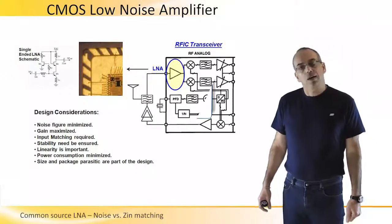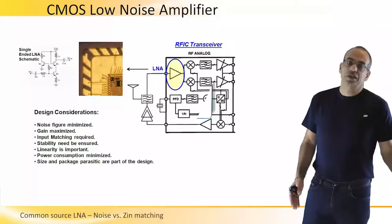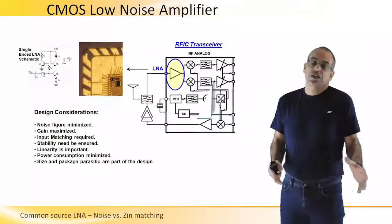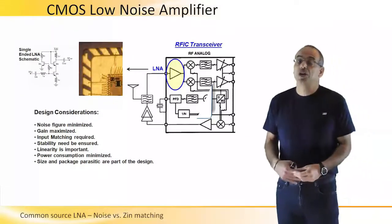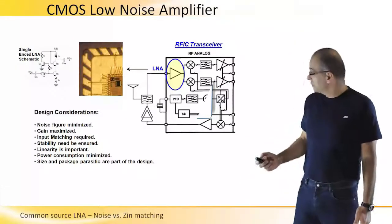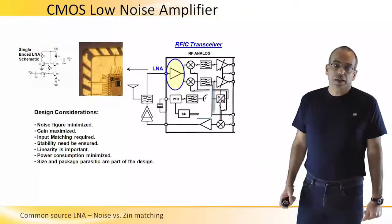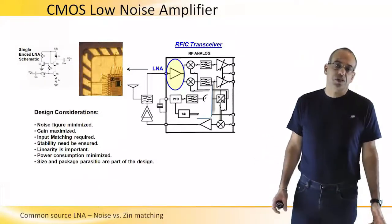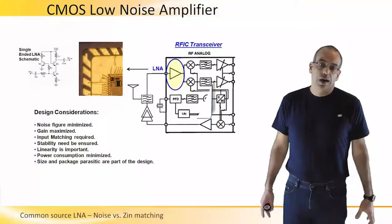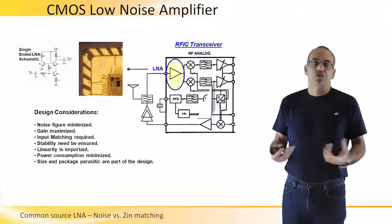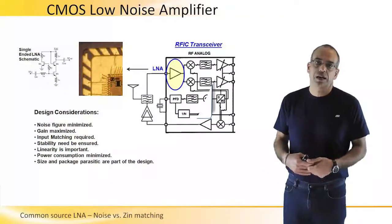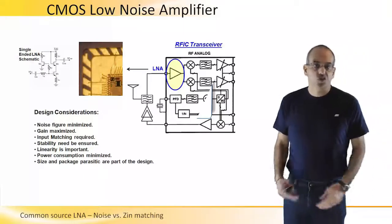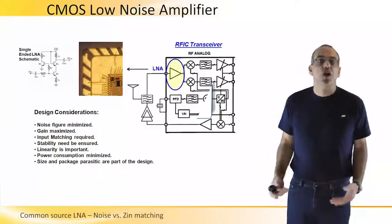Linearity is important even though signals received at the antenna are generally very weak — sometimes a signal comes from very close by and the channel still needs to remain linear. Power consumption is always a constraint, and size and package parasitics must be taken into consideration as part of the design, with boundary conditions on the area consumed by this circuit within the full RFIC.